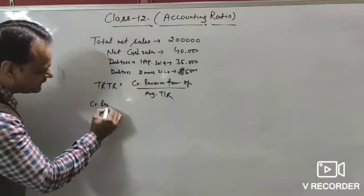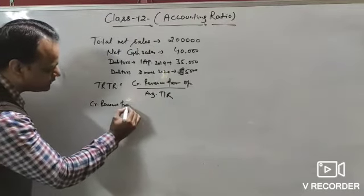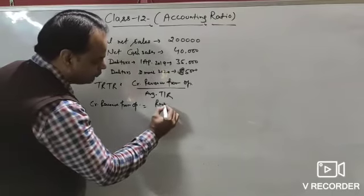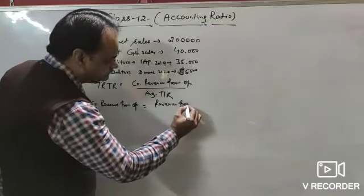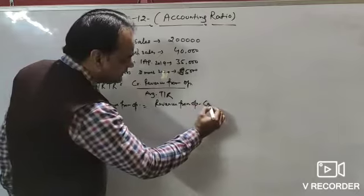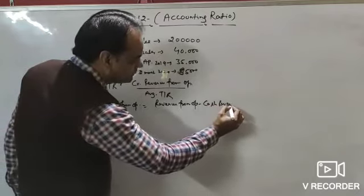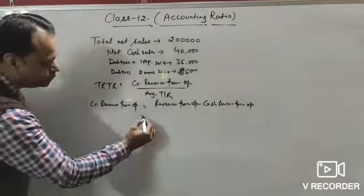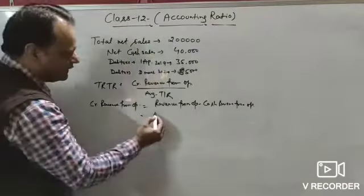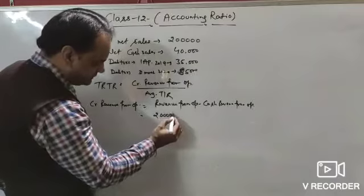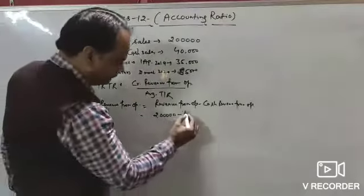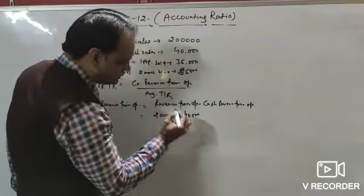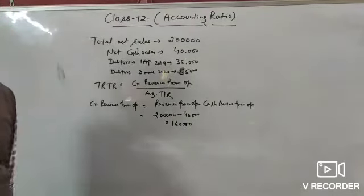Credit revenue from operation = revenue from operation minus cash revenue from operation = ₹2,00,000 (net sale) minus cash sale ₹40,000 = ₹1,60,000. This is our credit revenue from operation.